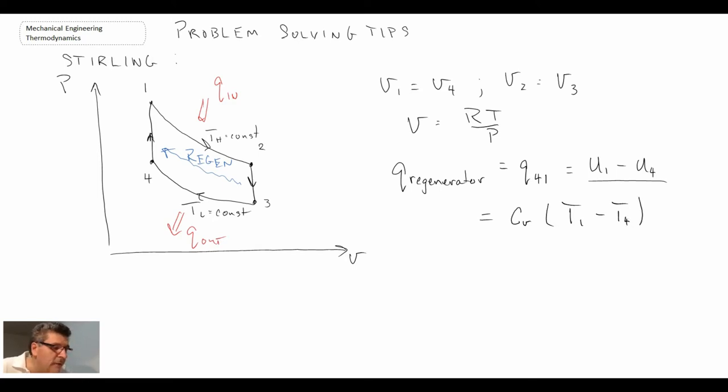And depending upon the working fluid, if we're using helium, one of the things about helium, if you remember when we were talking about property data on specific heats, for helium, the specific heat is not a function of temperature. And consequently, we can use the specific heat that would be in the back of the book and be independent upon the temperature change that you may have through that process. And so that would be an exact relationship then for the heat transfer between 4 and 1. So those are some of the things that you can use if you're faced with a problem dealing with the sterling.